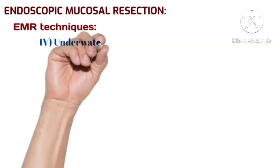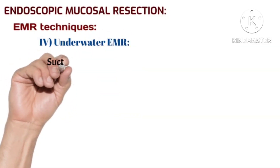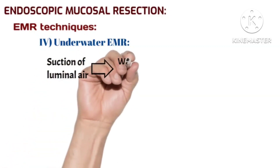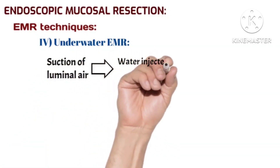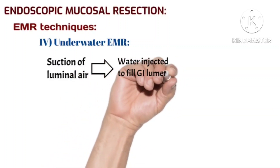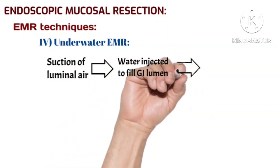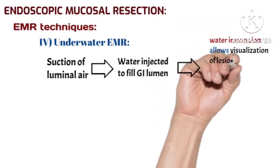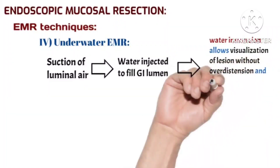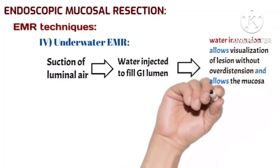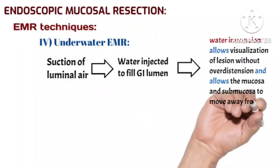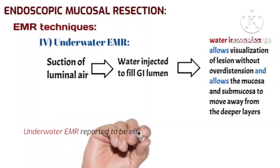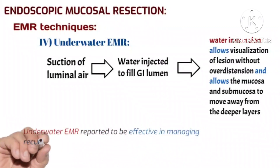The fourth EMR technique is underwater endoscopic mucosal resection. Luminal air is first suctioned out, then water is injected to fill the gastrointestinal lumen. Water immersion allows visualization of the lesion without overdistension and allows the mucosa and submucosa to float away from the deeper layers. Underwater EMR has been reported to be effective in managing recurrence after previous EMR, as submucosal fibrosis from prior resection makes lifting of the lesion difficult.